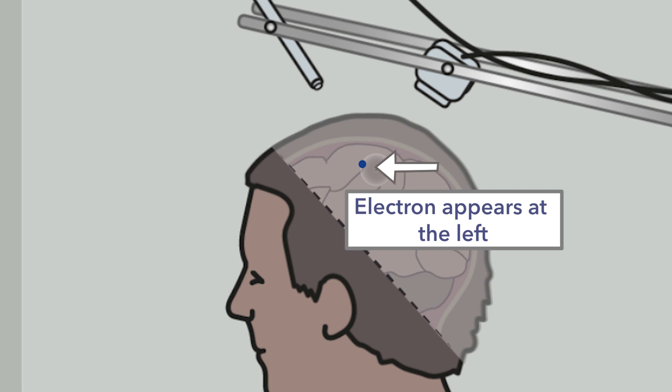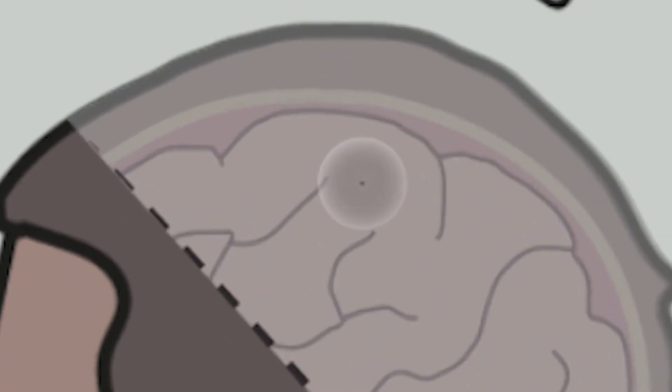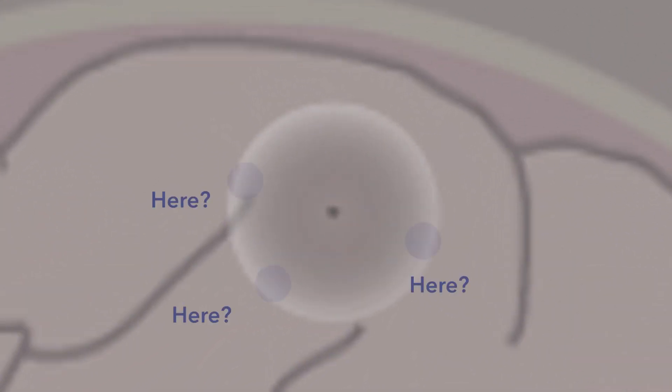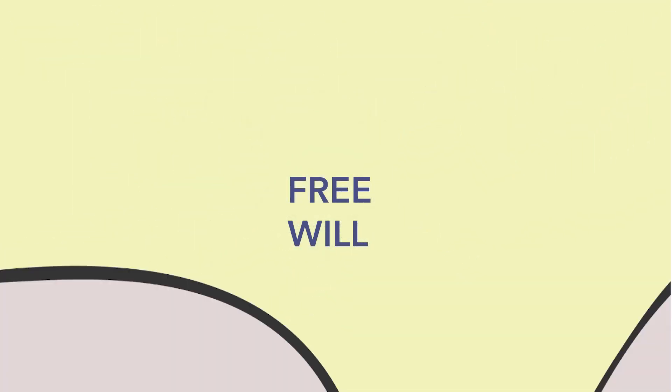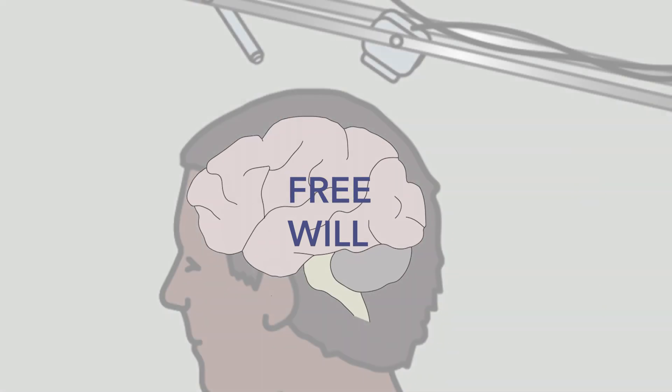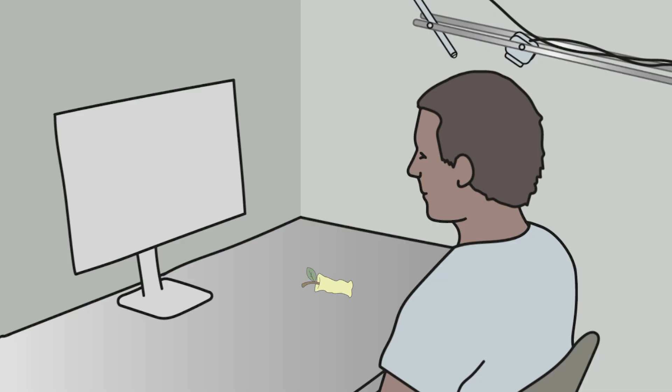At this quantum level of atoms and electrons we find the only known event where the future is not completely determined by the past, where multiple options really do exist. So if the person can freely choose where the electrons appear, then this impacts the molecules and brain cells, which in the end influences the choices they make.